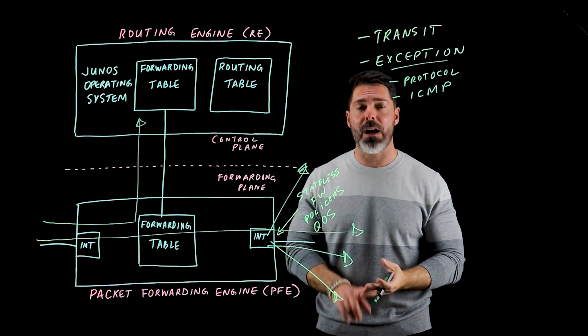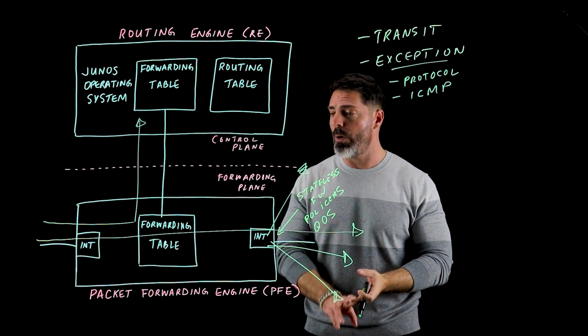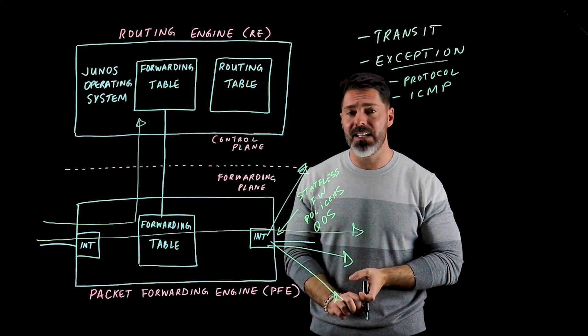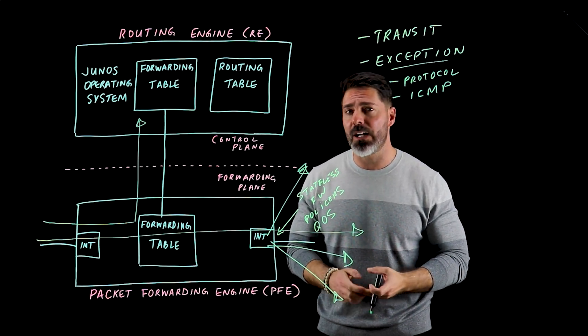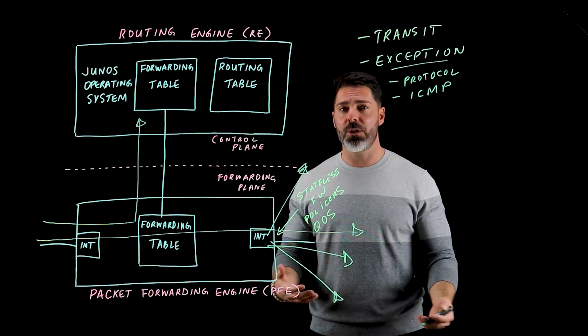So again, this is going to be things like routing protocol updates—BGP, OSPF—something that needs an ICMP echo reply, traceroute, management traffic, any of that type of stuff.